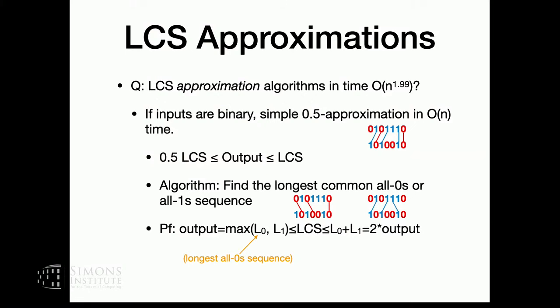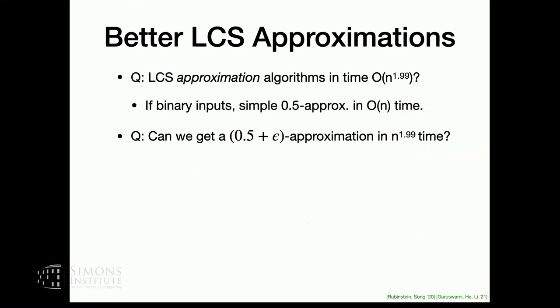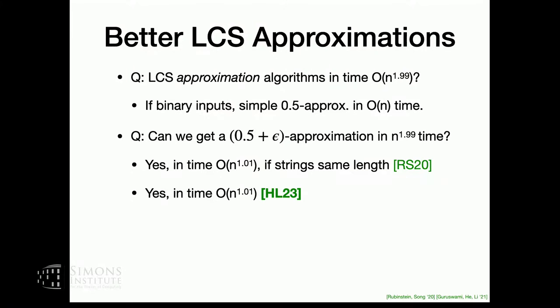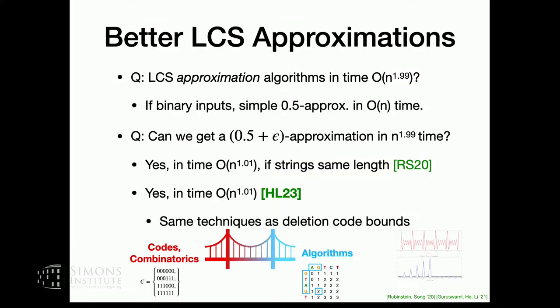So there's a simple half approximation, and you could naturally ask: can you get a half plus epsilon approximation? It was known by Rubenstein-Song that you could do this if the strings are the same length, but this really crucially used that the strings are the same length. Using some ideas from the deletion codes work, we were able to show you can actually do this even if the strings are unequal length. The main exciting part is that we use the same techniques as in the deletion codes bounds, building a bridge between the coding question and this algorithmic question.